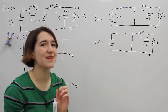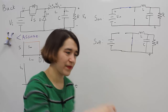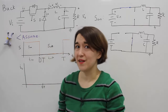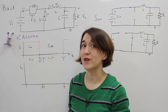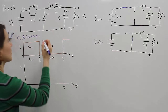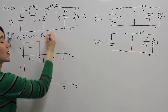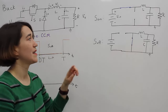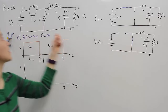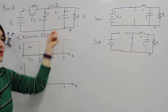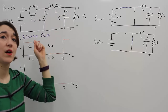For now, let's stick with continuous conduction mode. We need to make that assumption. We are assuming CCM — continuous conduction mode — such that during S off, the diode, also called the freewheeling diode, will also be on and closed.